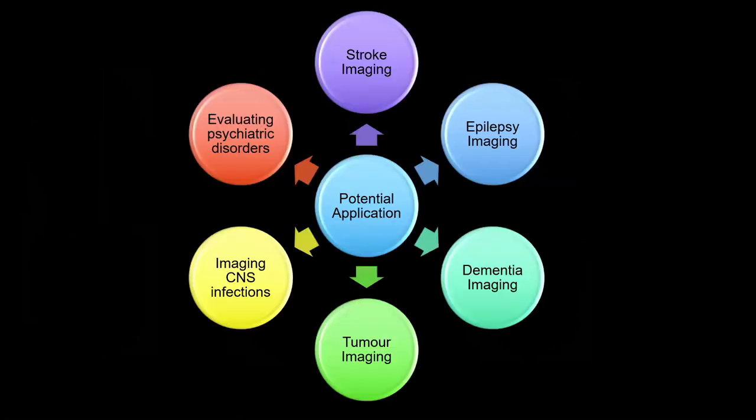Coming to the potential applications, there are several pathologies where we can use ASL to substantiate our diagnosis. Application of ASL in stroke we already saw — how it helps in determining the perfusion-diffusion mismatch in hyperacute stroke and how it helps differentiate stroke from stroke mimics. The remaining applications include epilepsy imaging, dementia, tumor imaging, imaging CNS infections, and imaging a few psychiatric disorders.